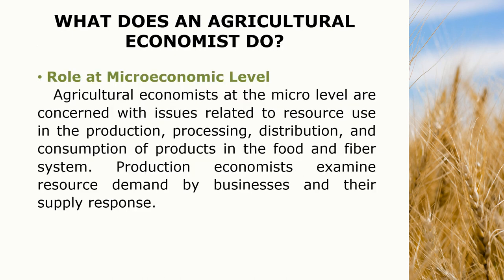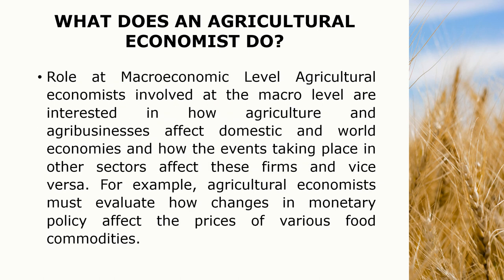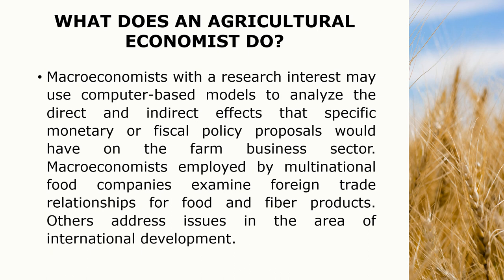What does an agricultural economist do? At the micro level, agricultural economists are concerned with issues related to resource use in production, processing, distribution, and consumption of agricultural products in the food and fiber system. Production economists examine resource demand for businesses and their supply response. At the macroeconomic level, agricultural economists are interested in how agriculture and agribusiness affect domestic and world economies and how events in other sectors affect these firms. For example, they must evaluate how changes in monetary policy affect prices of various foods and commodities. Macroeconomists may use computer-based models to analyze direct and indirect effects of monetary or fiscal policy proposals on the farm business sector, and also examine foreign trade relationships for food and fiber products.